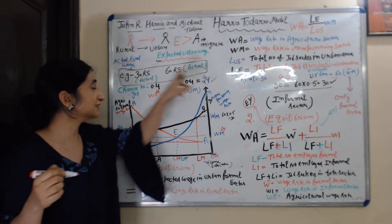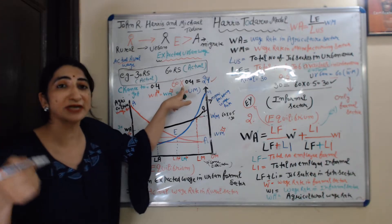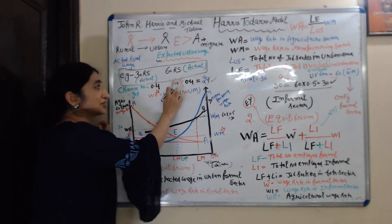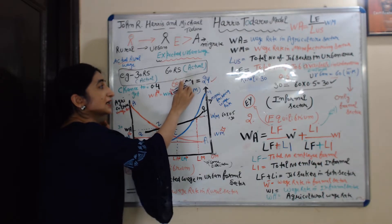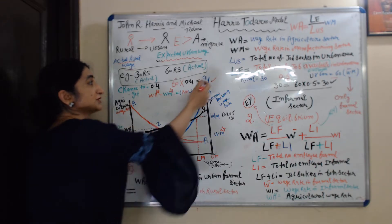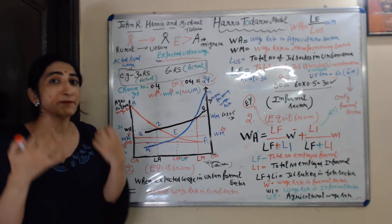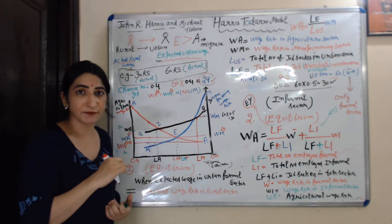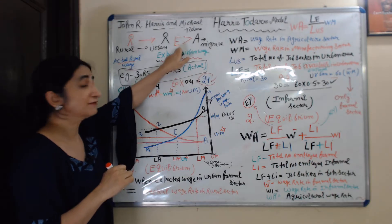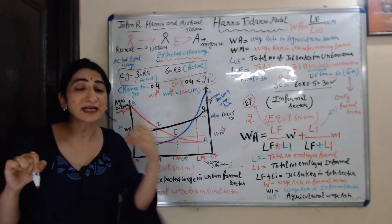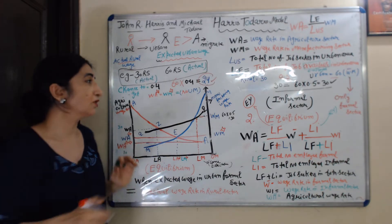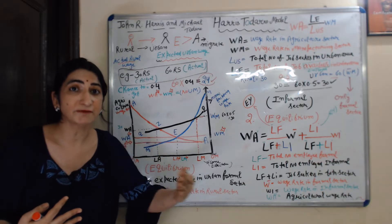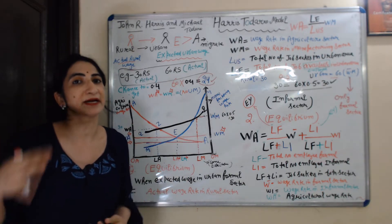How do we find expected urban wage rate? When we multiply actual urban wage rate with chance to get employment in urban sector, we get expected urban wage rate. In this case, the person is earning 30 per day in rural sector, and expected urban wage rate is 24. Since expected urban wage rate is less than actual rural wage rate, he will not migrate because expected income is less than actual income. If expected urban income were more than actual rural income, then he would think about migration.